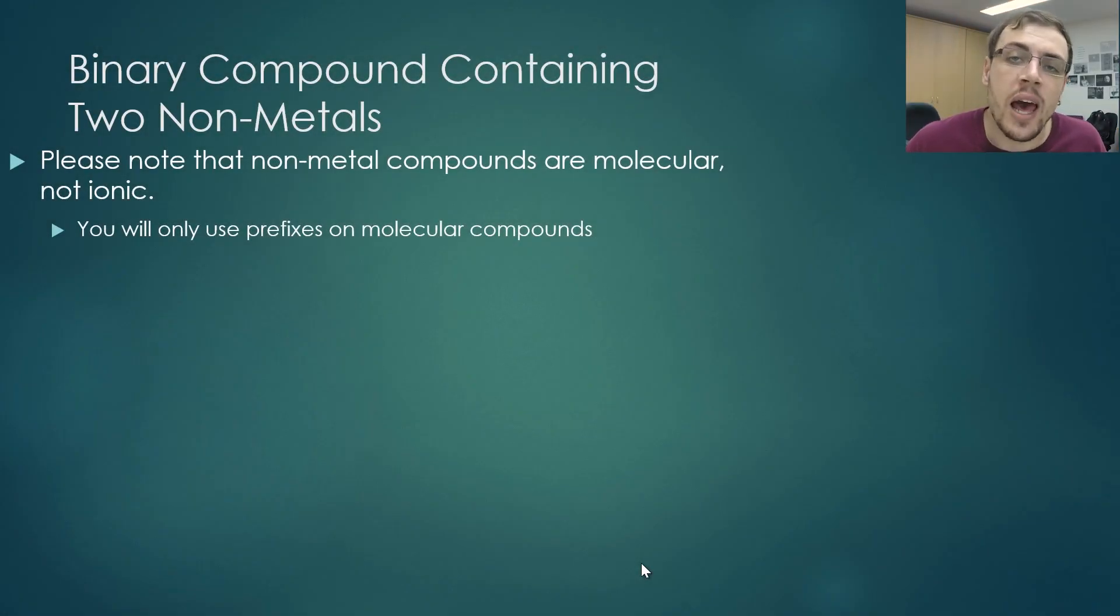Now that we've finished having a look at ionic compounds and the binding of a metal and a non-metal element, let's look now to a binary compound containing two non-metals. Something I do want you to keep in your mind here is that non-metal compounds are molecular, not ionic. Something else that you should keep in mind is that you will only use prefixes on molecular compounds.